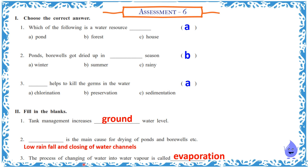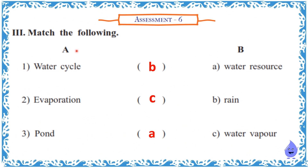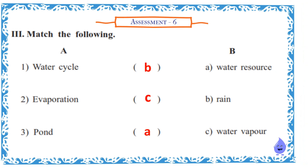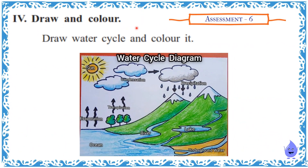The process of changing of water into water vapour is called evaporation. Match the following: water cycle — rain; evaporation — water vapour; pond — water resource. Draw and colour the water cycle. This is the drawing of the water cycle.